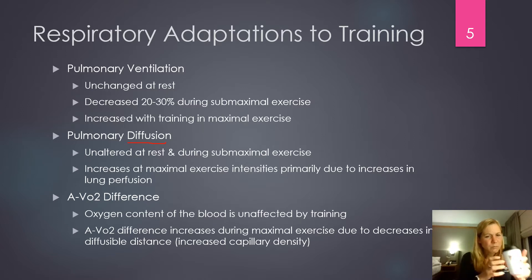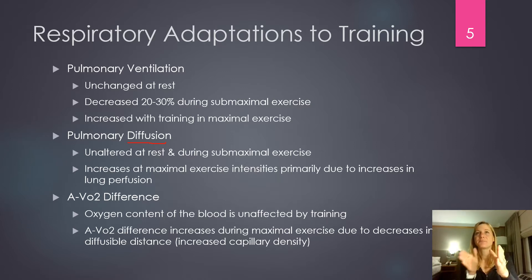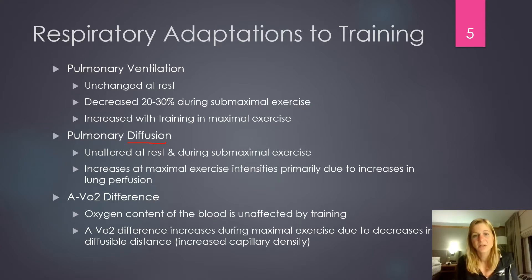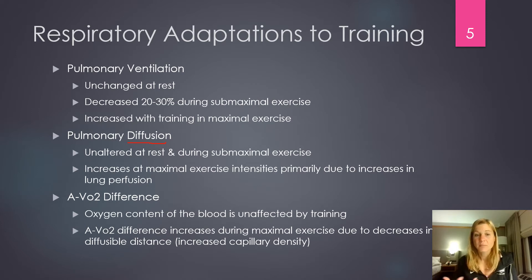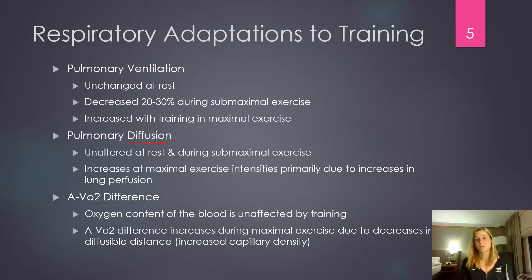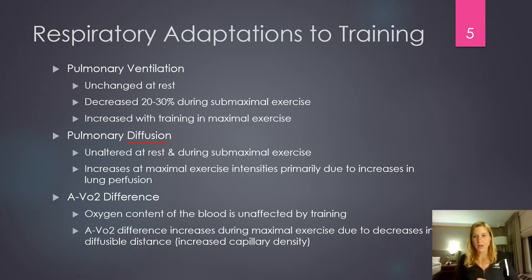The a-vO2 difference: the oxygen content of the blood is unaffected by training. We're already at about 98% saturation moving oxygen from the lungs into the arteries, so the arterial value of the a-vO2 difference doesn't change. However, a-vO2 difference during exercise improves because we have an increase in capillary density to the active muscles, allowing us to deliver more oxygen. We change the venous value because we're able to drop off more oxygen at the level of the tissue.